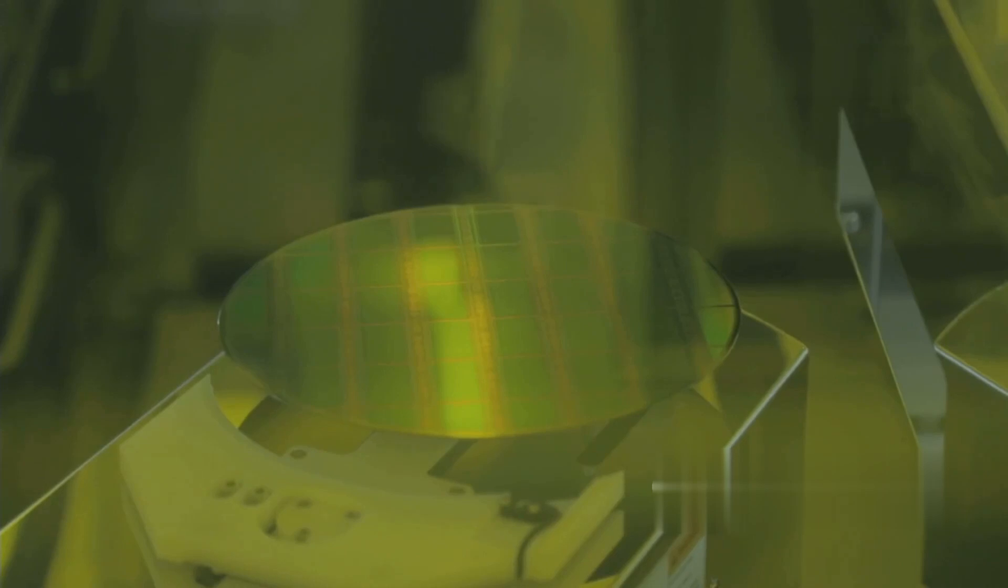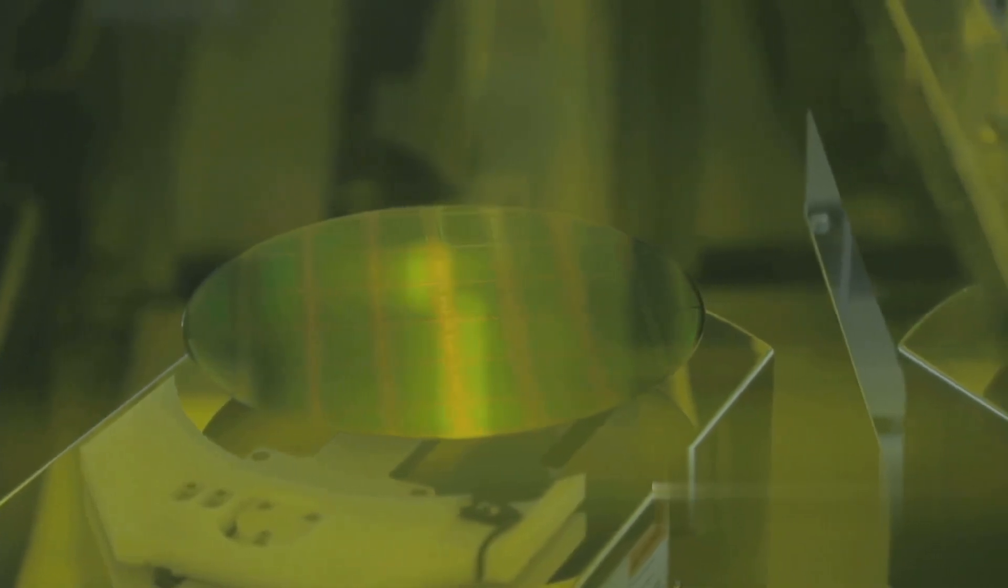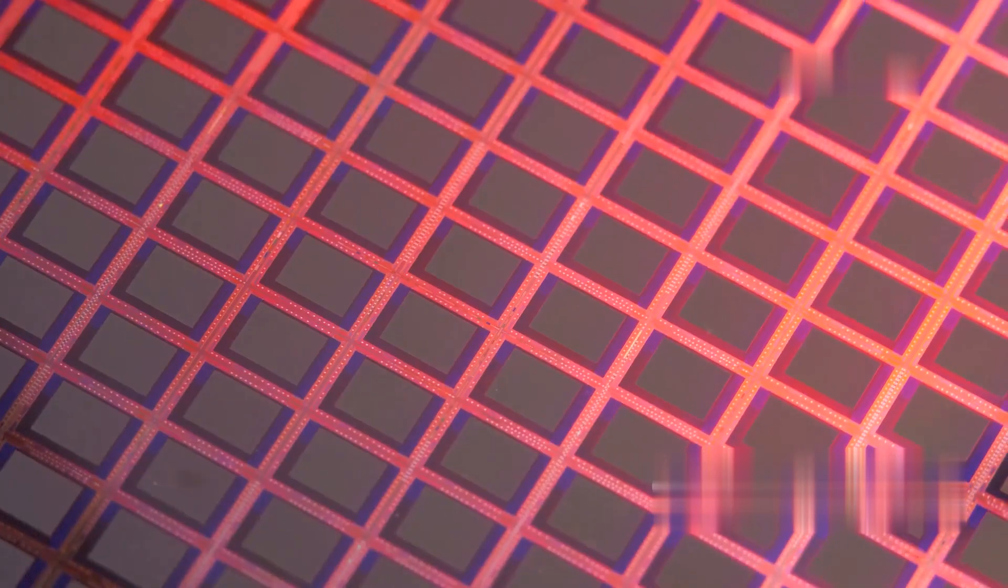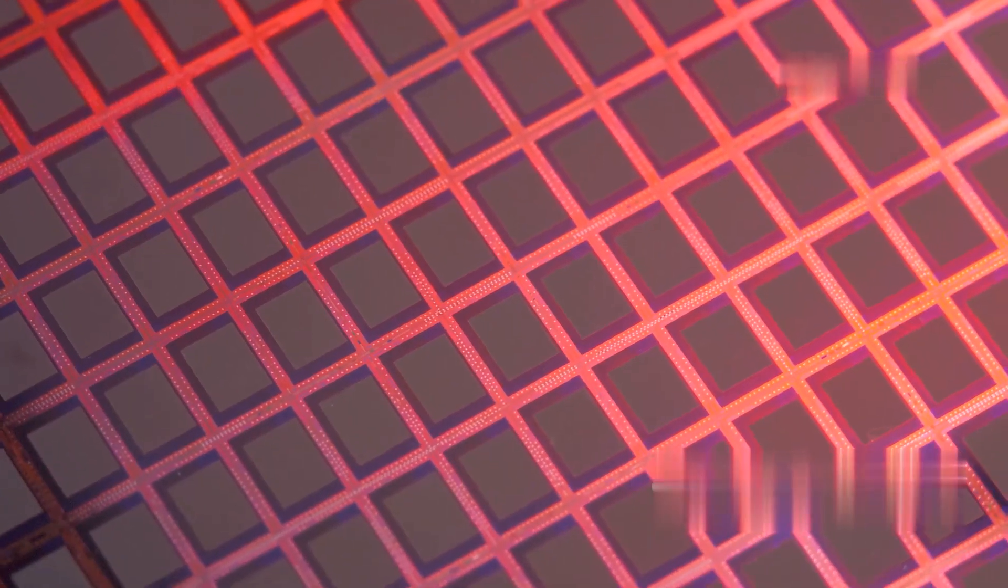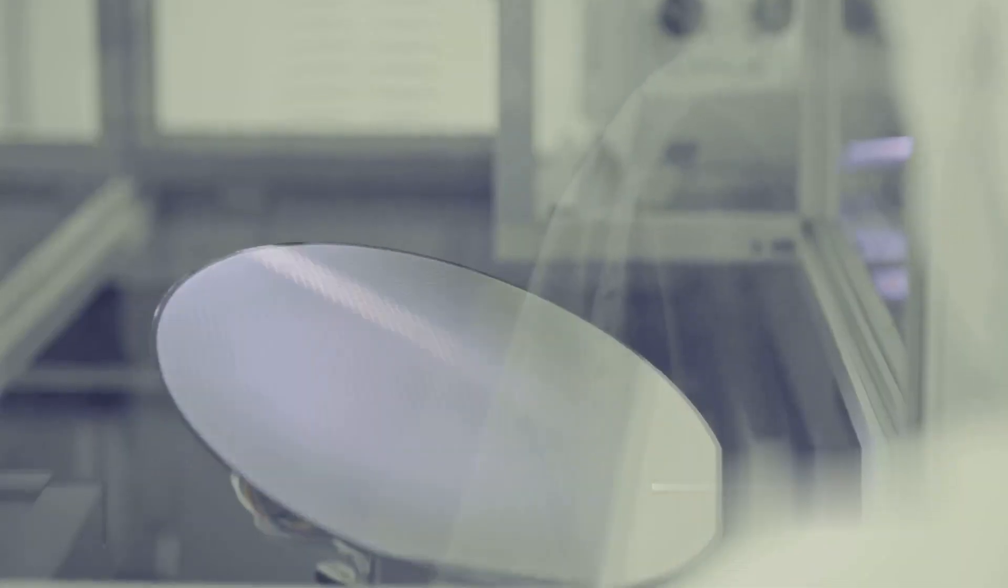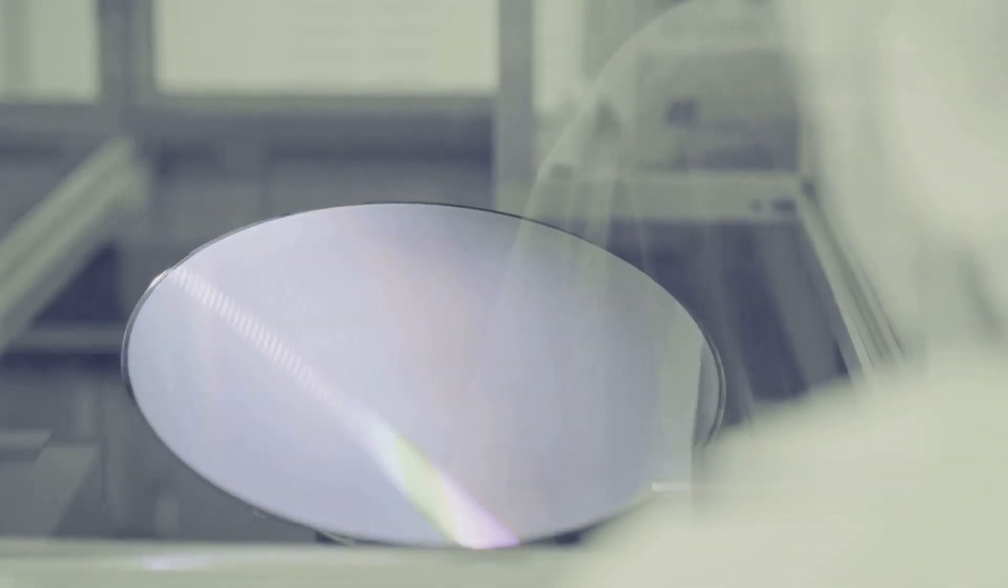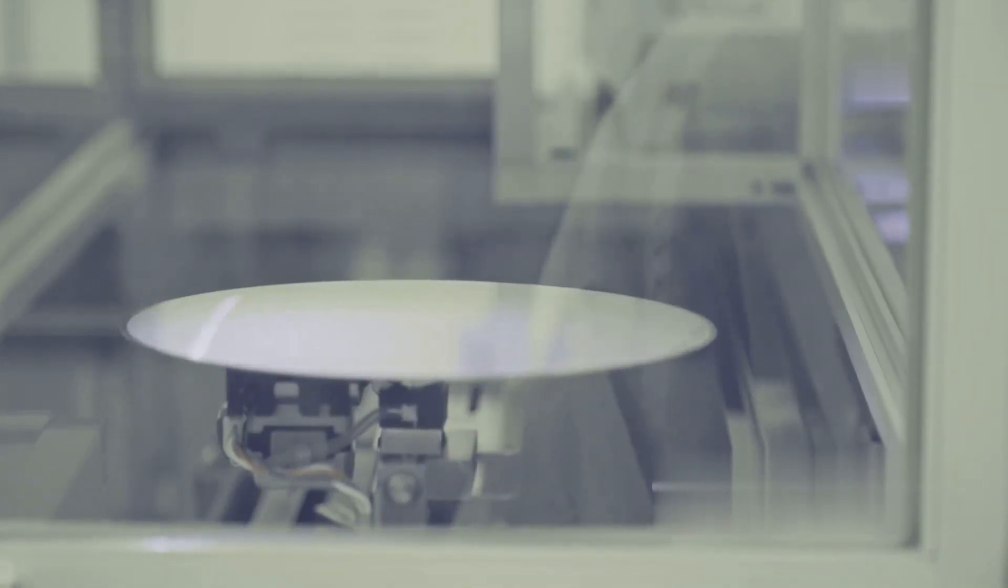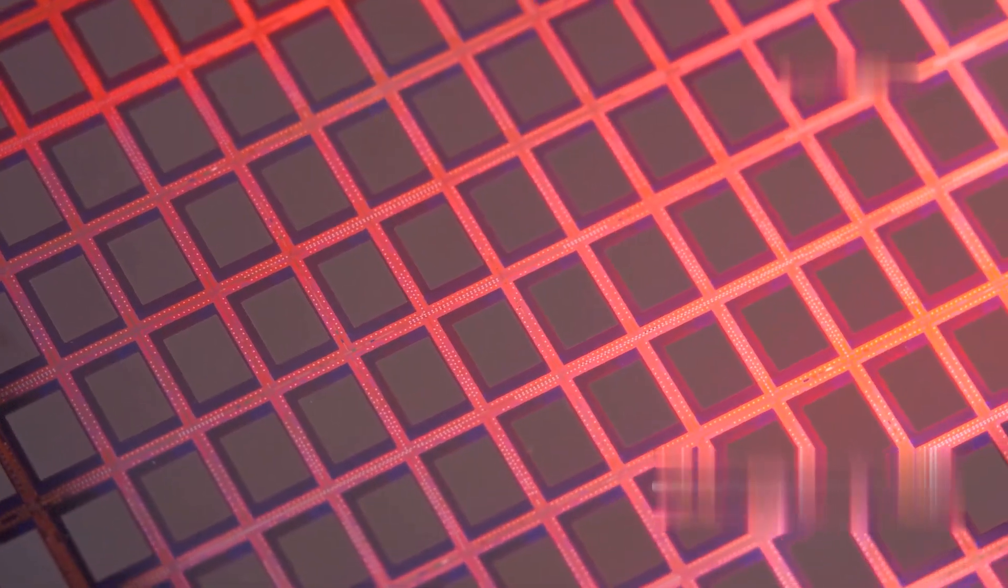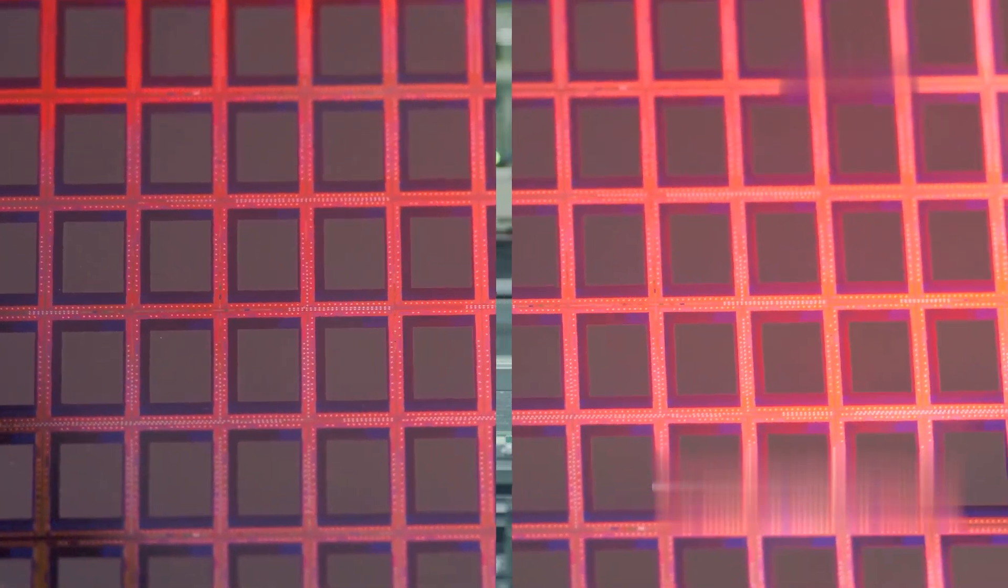This highly purified silicon, with impurities measured in parts per billion, forms the foundation for transistor fabrication. The purified silicon is then melted and grown into large, cylindrical, single crystals using the Czochralski process. This process involves dipping a seed crystal into molten silicon and slowly pulling it upwards, allowing the molten silicon to solidify around the seed, forming a single, continuous crystal structure. These crystals, known as ingots, are the starting point for creating silicon wafers, the canvases upon which transistors are built.